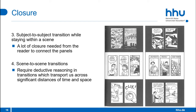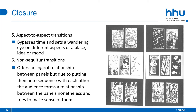The scene-to-scene transitions require deductive reasoning and transport us across significant distances of time and space, as the reader has to understand that while panels aren't set in the same time and space anymore, they are still connected. The aspect-to-aspect transitions bypass time and set a wandering eye on different aspects of a place, idea or mood. The non-sequitur transitions offer no logical relationship between panels, but due to putting them in sequence, the audience forms a relationship between them nonetheless and tries to make sense of them, even though they don't seem connected.